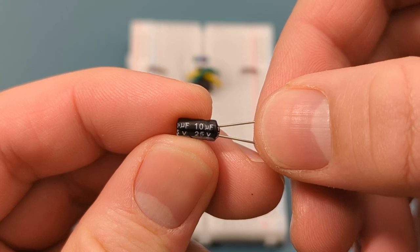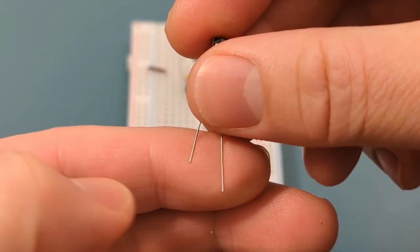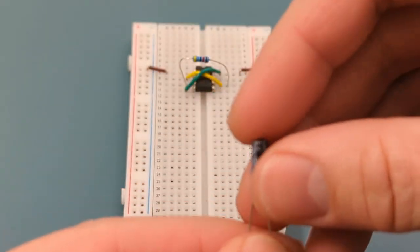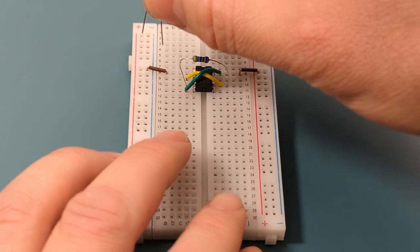Insert a 10 microfarad capacitor into pin two, or trigger, and the negative rail. Insert the shorter leg into the negative rail.